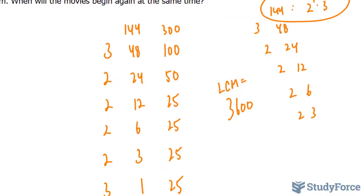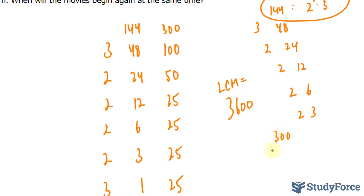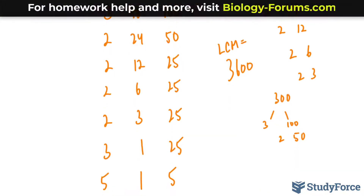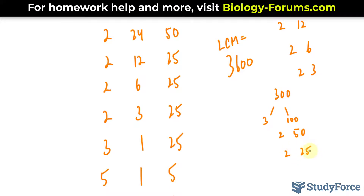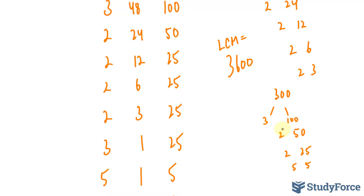Now let's do 300 using the same format. We get 3 and 100, then 2 and 50, 2 and 25, and finally 5 and 5. So the prime factorization of 300 is 2 to the power of 2, times 3, times 5 to the power of 2.